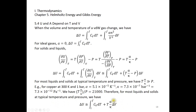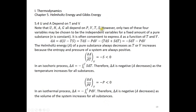To obtain a numerical value of ΔU, plug in C_V, initial and final temperatures, the volume change, and the values of α and κ at the given temperature. Note that U, H, A, and G all depend on P, V, T, and S, but only two variables are independent — you can pick any two out of P, V, T, S.